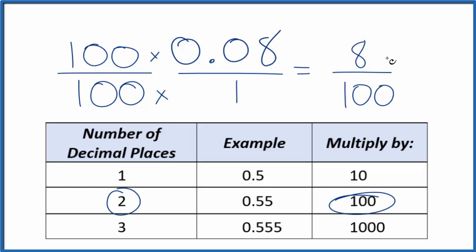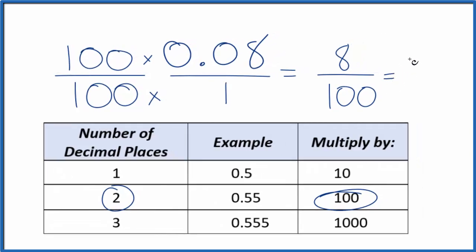We could reduce this further. 4 goes into 8 twice, and it goes into 100 25 times. So the simplest form would be 2 25ths. That has the same value as 0.08.